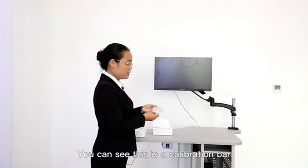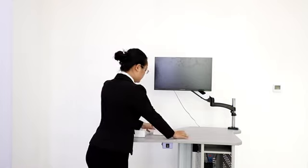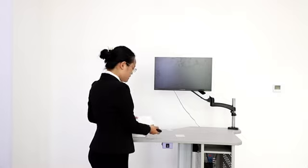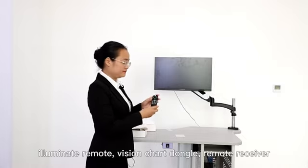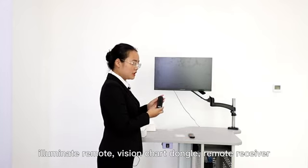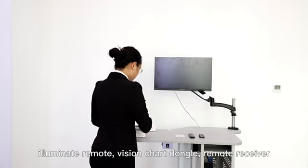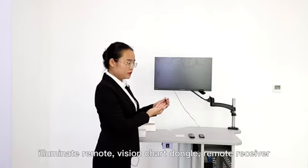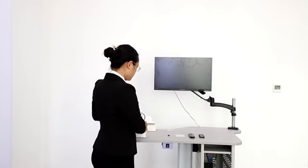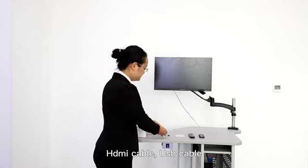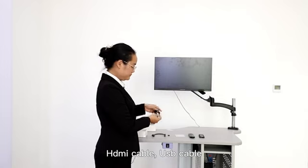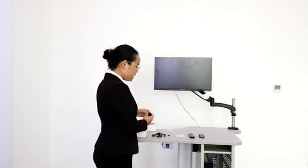You can see this is a calibration bar, illuminate remote, vision check dangle, remote receiver, HDMI cable, USB cable, and power adapter.